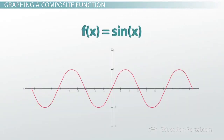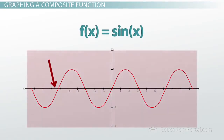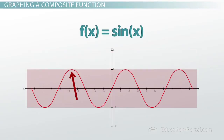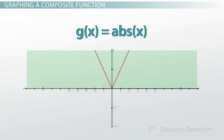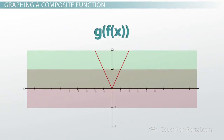Consider f of x equals sine x: its domain is all x and its range is between minus 1 and 1. Now consider g of x equals the absolute value of x: its domain is all x and its range is anything greater than or equal to 0. Looking at the range of sine x, let's examine g of f of x, where g is the absolute value.